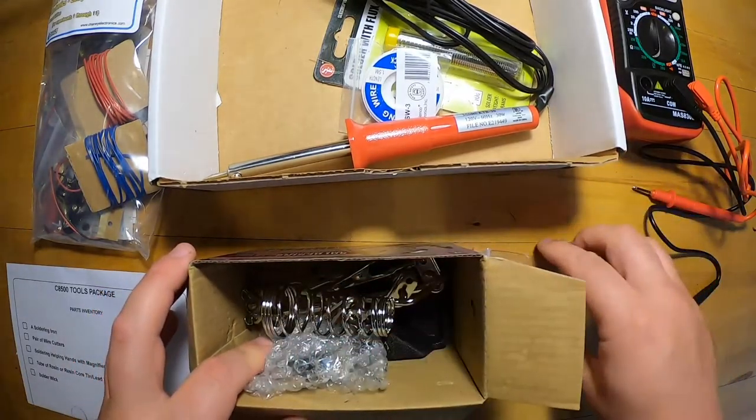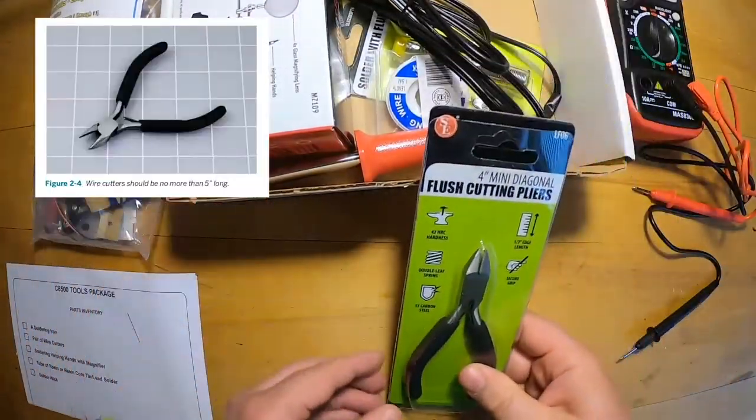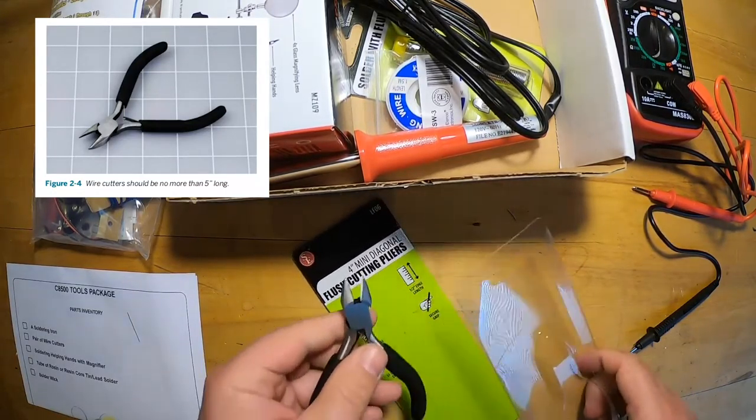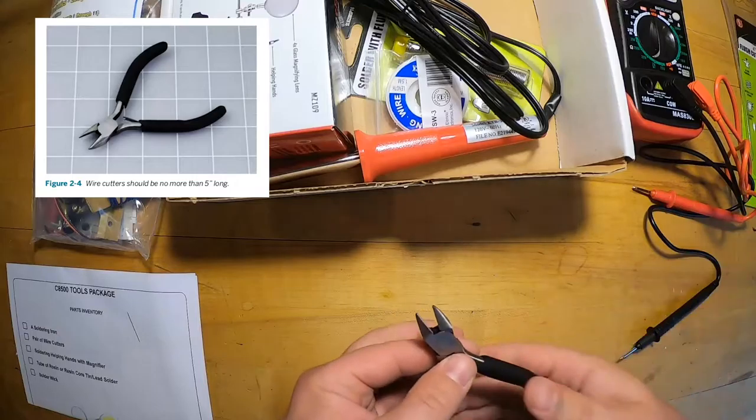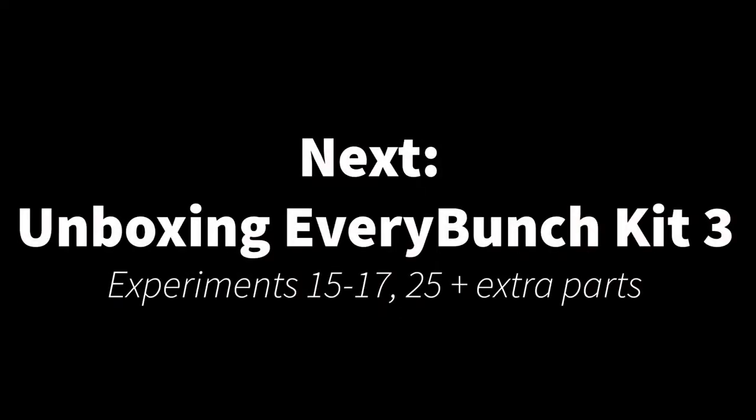All these parts will assemble to make the picture that's on the outside of the box. Most importantly, and one that everyone's going to need to obtain, is a four or five inch pair of wire cutters, nice and sharp. Keep those out, and we'll be unboxing kit number three in the next video.